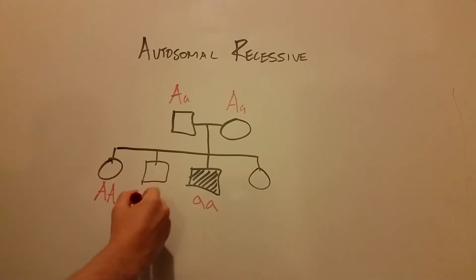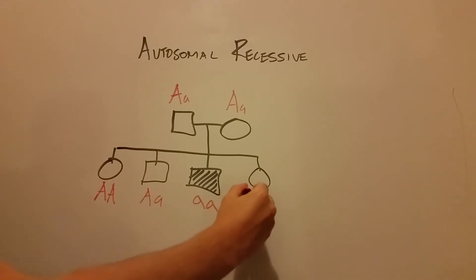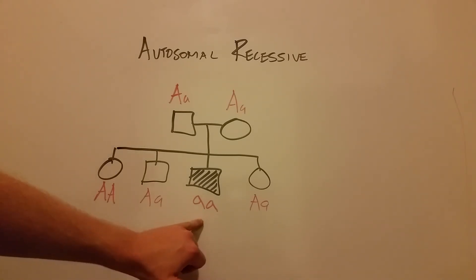According to probability, you have one that would be homozygous dominant, one heterozygous, another heterozygous, and then only one homozygous recessive. Thus, only one would manifest the disease or have an observable phenotype involving the autosomal recessive trait, and that would be this guy right here.